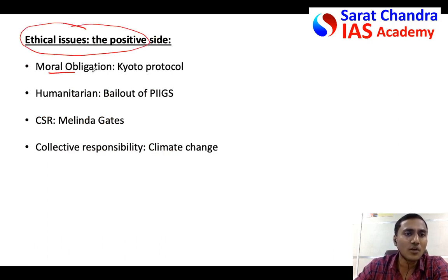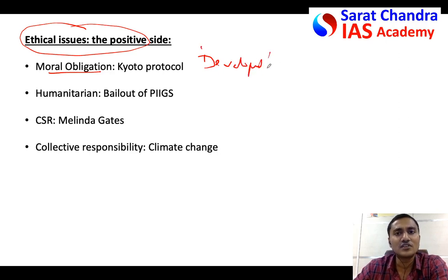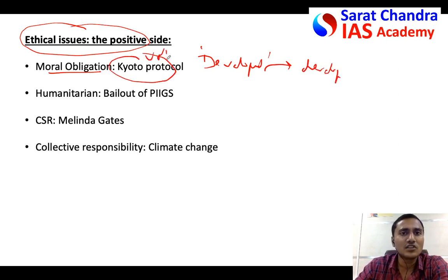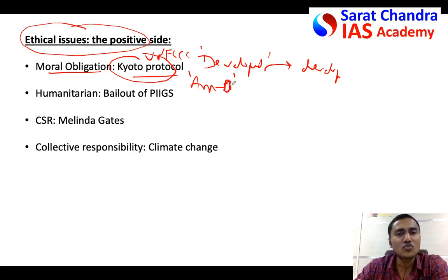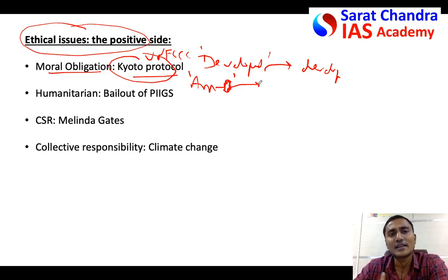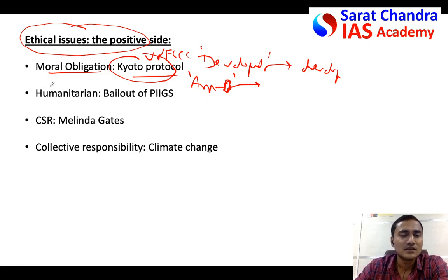Now let's come to the positive aspects of international funding. One is the moral obligation - developed countries feel it is their moral obligation to help developing countries. For example, under the Kyoto Protocol within the United Nations Framework Convention on Climate Change, Annex B industrialized countries accepted to reduce their carbon emissions and agreed to help developing countries in green projects, because they feel historically responsible for polluting the globe.